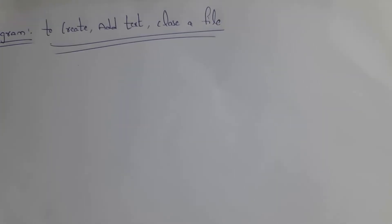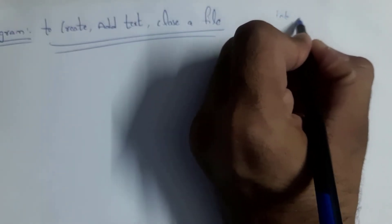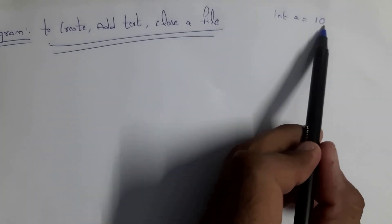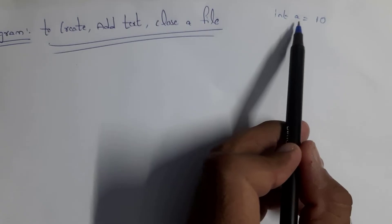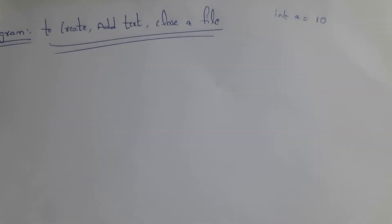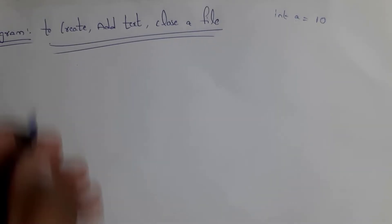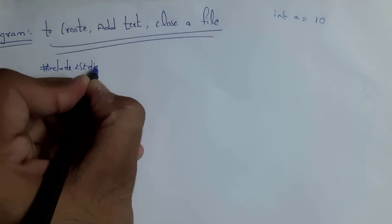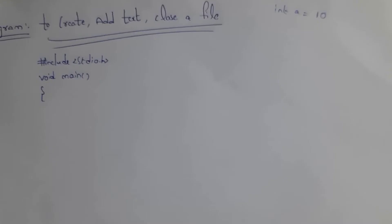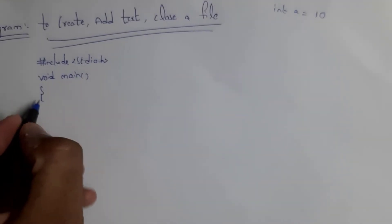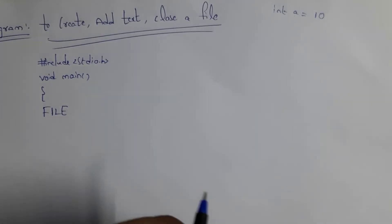Normally in C programming we store values like 'int a = 10' to store value 10 in variable A. But we cannot store a file directly in C — we can only store the address of a file. To store the address of a file we need to use pointers. We create a file using the FILE type. First, write #include stdio.h, then write void main.